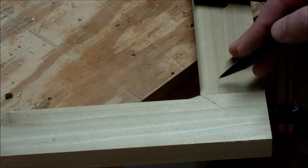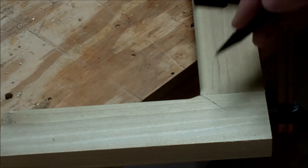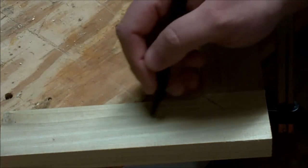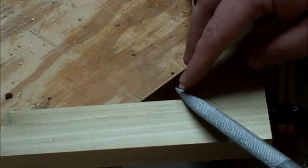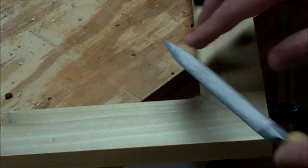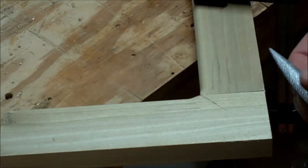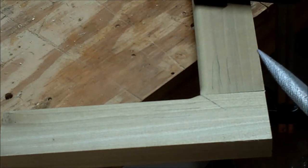One thing to keep in mind is our grain direction is going this way and this way. But as we want to get started here, we're going to take the rasp and we're going to go against the grain. So after we're done with the rasp taking light cuts, we're going to come back with sandpaper to clean this up.